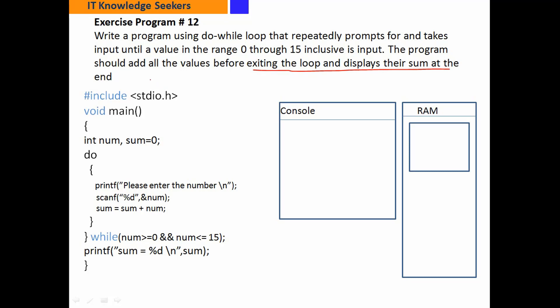हमारा program input लेता रहे — जब तक हम input value 0 और 15 के दरमियान देंगे (जिसमें 0 और 15 भी शामिल हैं) — 0 या उससे बड़ी और 15 या उससे छोटी value, इस range में कोई भी number input करेंगे तो वो उसको sum करता रहेगा और next input demand करेगा। यह process तब तक चलता रहेगा जब तक value 0 और 15 के दरमियान है। जैसे हम कोई negative value देंगे या 15 से बड़ी value देंगे तो loop terminate कर देगा।